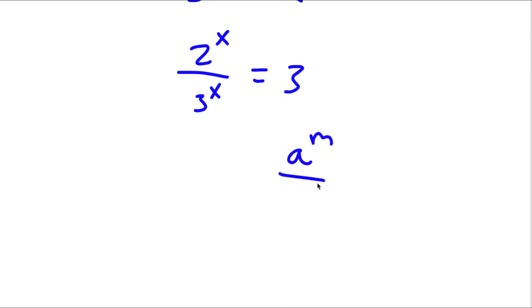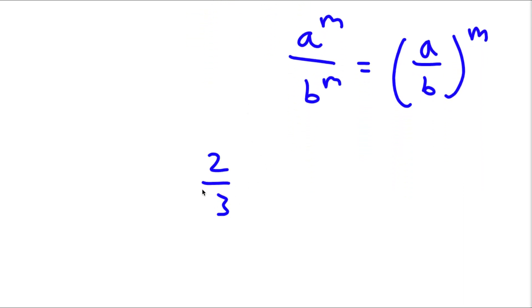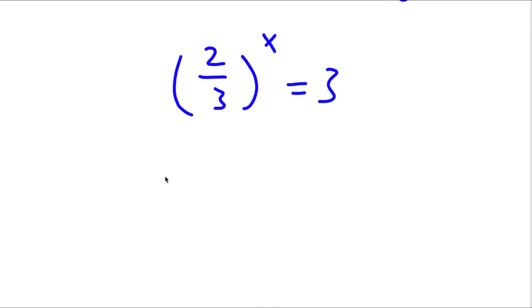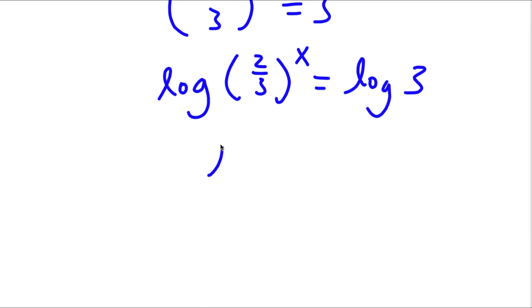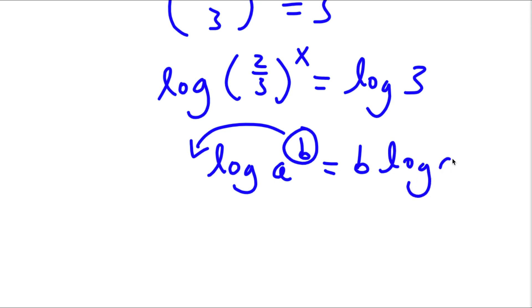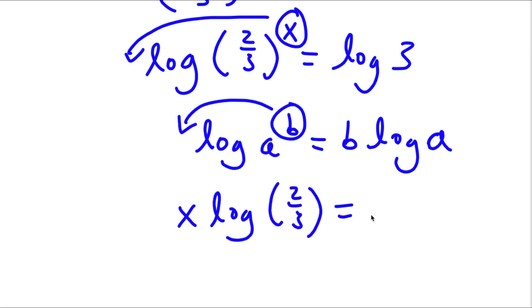Now if I have something in the form a to the power of m over b to the power of m, this is the same thing as a over b to the power of m. So 2 to the power of x over 3 to the power of x equals 2 over 3 to the power of x, which equals 3. Now I'm going to take the log on both sides. So I have log of 2 over 3 to the power of x equals log 3. Using the power rule, I can move the exponent x to the front, giving x times log of 2 over 3 is equal to log 3.